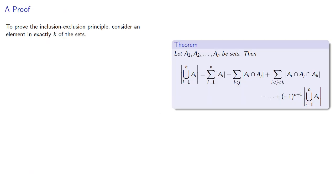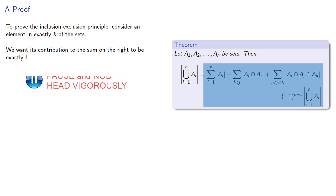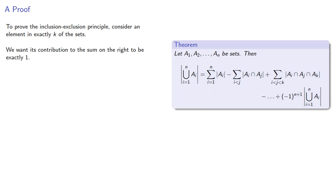To prove the inclusion-exclusion principle, consider an element in exactly k of the sets. We want its contribution to the sum on the right to be exactly 1. Now let's consider where that appears in this sum.